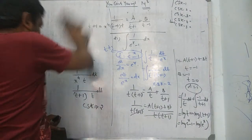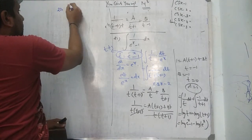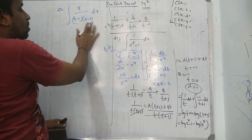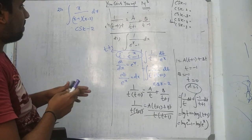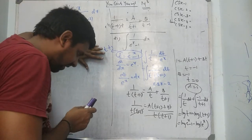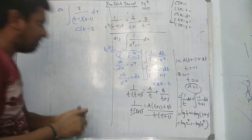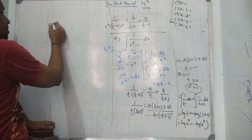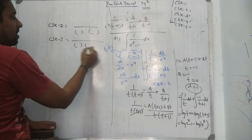Now question number 22: x over (x minus 1)(x minus 2) dx. Numerator is x to power 1, denominator has two brackets — therefore this is CSK2. Write A over (x minus 1) plus B over (x minus 2). Then it's easy to work out. So I completed Exercise 7.5 using partial fractions.